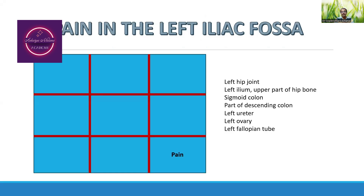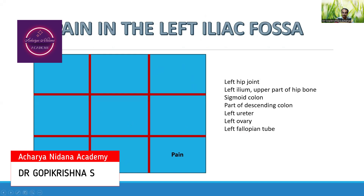In the previous session we discussed chest pain; here we will discuss pain in the left iliac fossa. Looking at the nine quadrants of the abdomen, if the person is suffering from pain in region number nine - the left iliac fossa - the possible afflictions include: left hip joint involvement, left ilium involvement, sigmoid colon involvement, descending colon involvement, left ureter, left ovary, and left fallopian tube. These are the different organs covered by Sapekshanidana and Vyavachedaka Nidana.